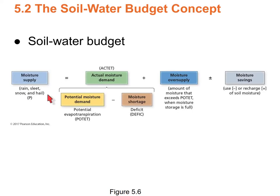In the soil water budget, the moisture supply is precipitation — that's incoming water. POTET is the potential moisture demand — how much water the system needs. ACTET is the actual amount of water used by the system, limited by two sources: the moisture supply (precip) and moisture savings (water already in the ground). There's a limit to how much water the soil can hold — usually four inches is used as the maximum before you start getting runoff, which is the moisture oversupply.